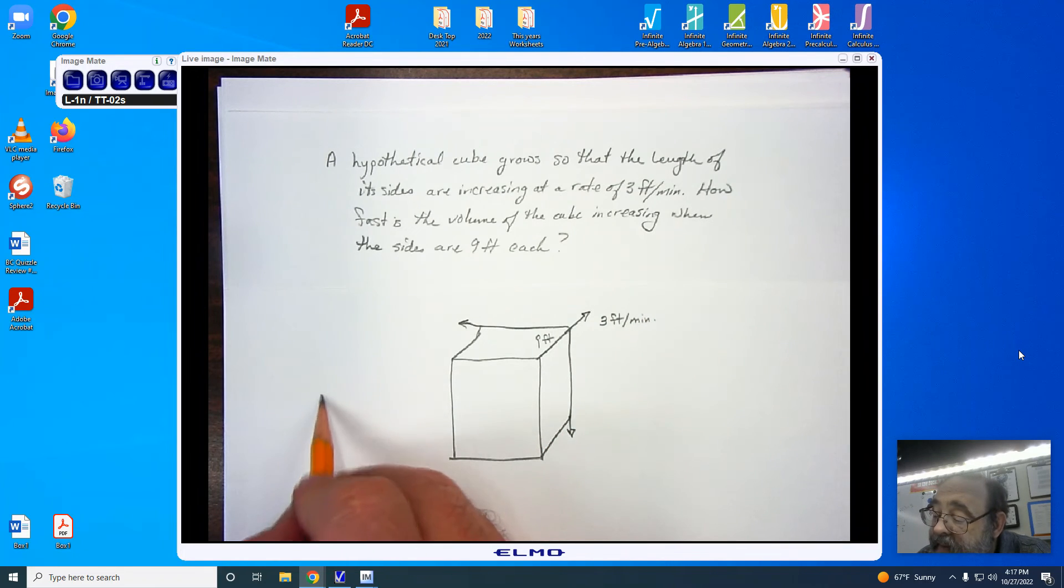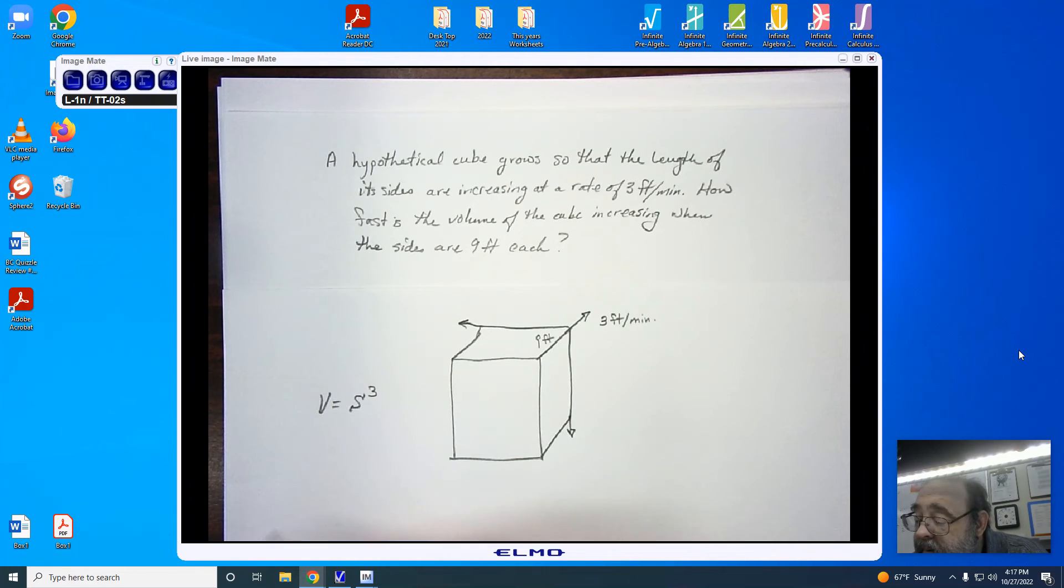Now, we know that the volume of a cube is the sides cubed. Side times side times side, just like length times width times height. And when I do my V prime, I'm looking at 3S squared times S prime.